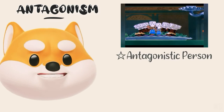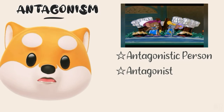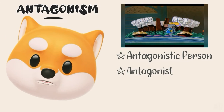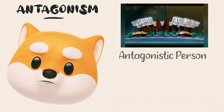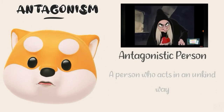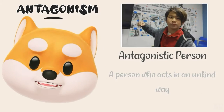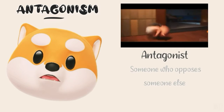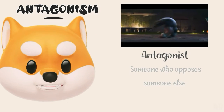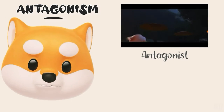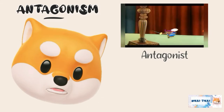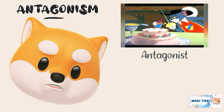Antagonistic person and antagonist are the two words related to antagonism. Antagonistic person refers to a person who acts in an unkind way, whereas antagonist is someone who opposes someone else. Your opponent in a competition could be considered as an antagonist.